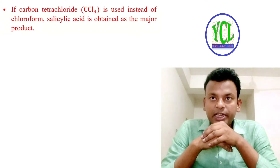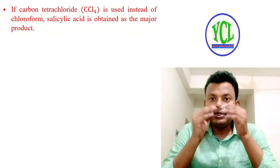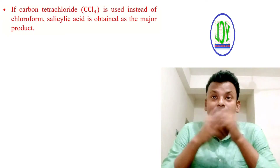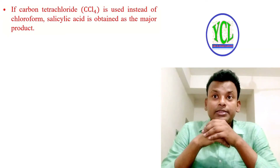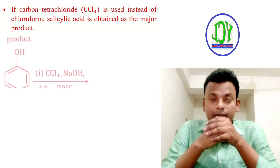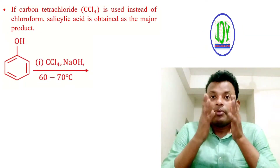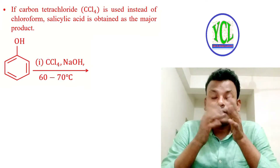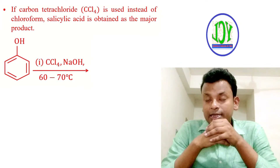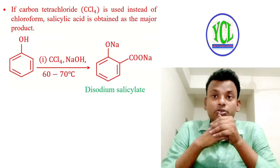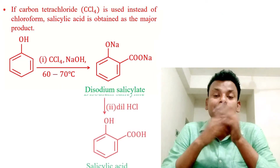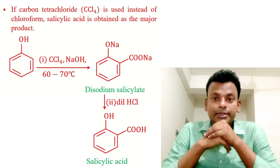If carbon tetrachloride is used instead of chloroform, salicylic acid is obtained as the major product. Phenol reacts with CCl4 and NaOH at 60 to 70 degrees centigrade to give disodium salicylate, and hydrolysis gives salicylic acid.